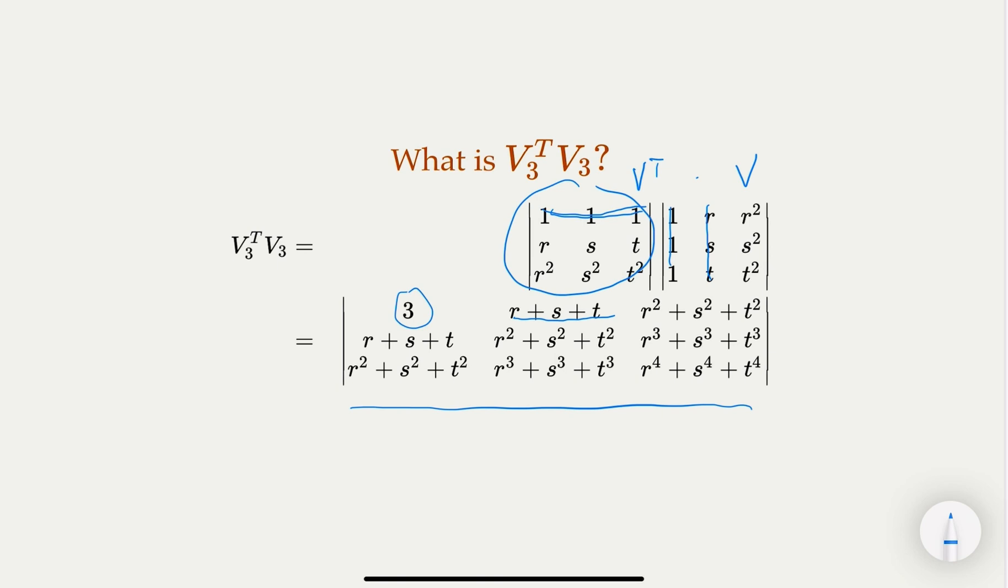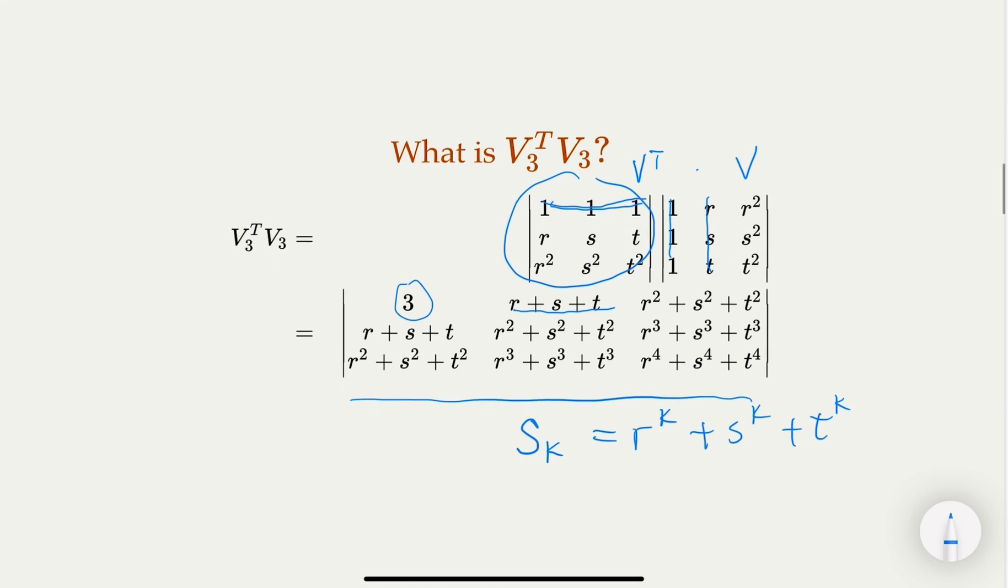You notice that the sum and the sum of squares, sum of cubes - this is exactly what we learned earlier about S_n or S_k, which is r to the kth power plus s to the kth power plus t to the kth power. So we learned that in earlier lectures.